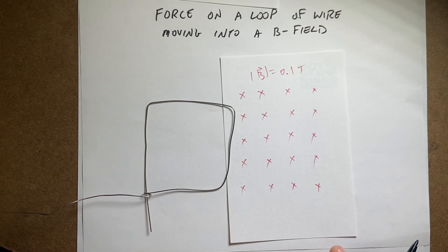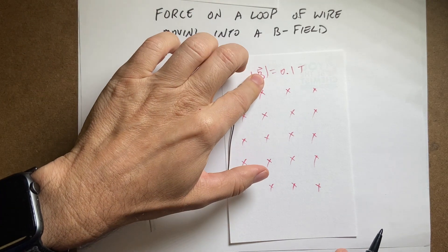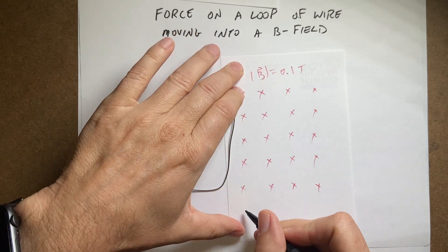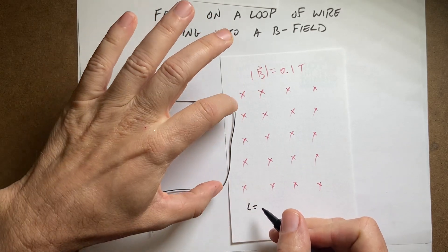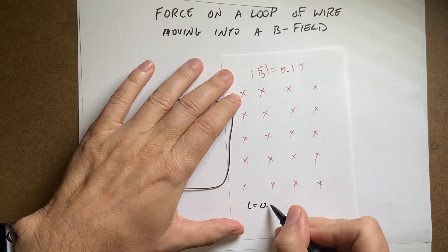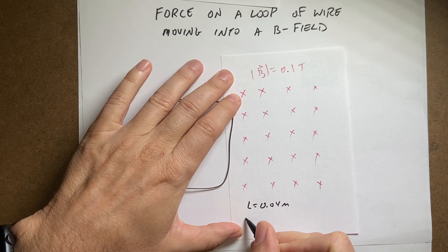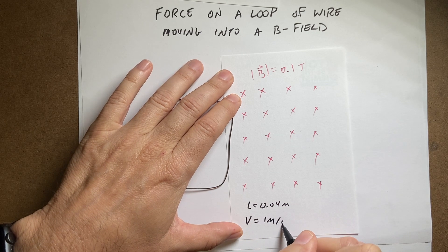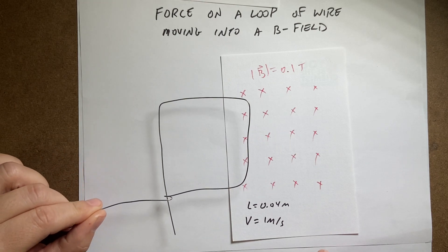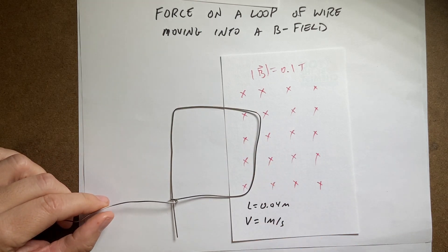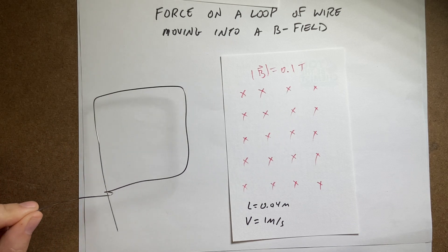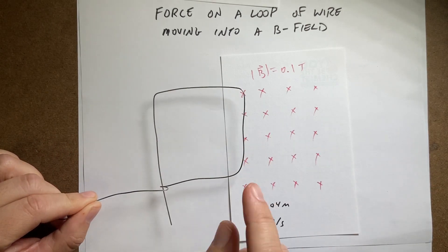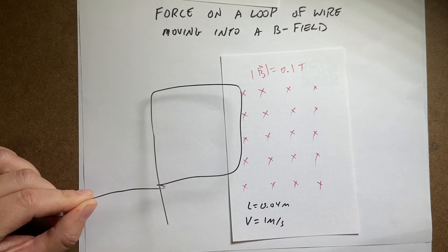So let's say the length of this square on the side is 0.04 meters. And let's say the speed is 1 meter per second. So that's the speed it's going to go into. So how would I calculate the force on this wire as I move it in there? Would it be pushing this way? Would it be pushing that way? There's a whole bunch of questions.